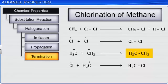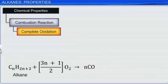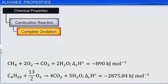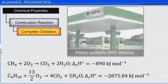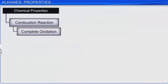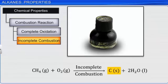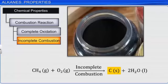Now let's understand the combustion reaction of alkanes. On heating in the presence of air or di-oxygen, alkanes get completely oxidized to carbon dioxide and water, along with heat. This is why alkanes are used as fuels. When alkanes undergo incomplete combustion, they form carbon black, which is used in the manufacturing of ink, printer ink, black pigments, and as fillers.